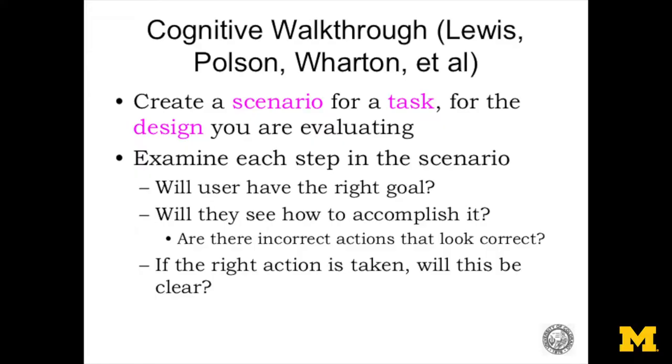Then finally, suppose the person is on track, trying to do the right thing, figures out how to do it, and then they do it and something happens that looks weird — it's not what they expect. They say, I thought I did the right thing, but obviously I didn't, I'd better back up and make another choice. Big trouble. So those are the key evaluative questions you're going to ask yourself as you look through each step of the scenario.